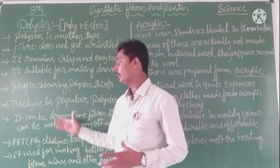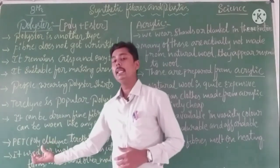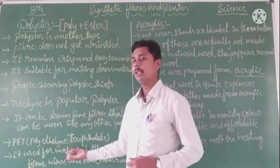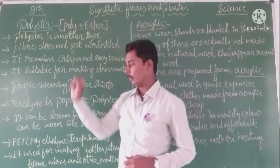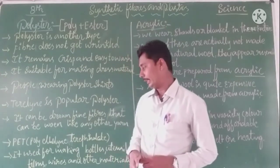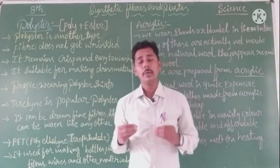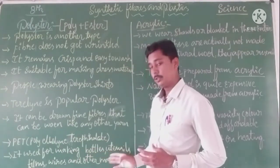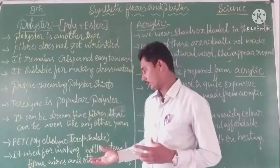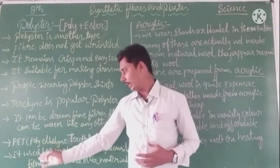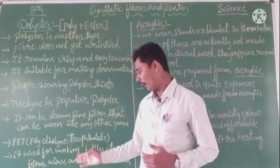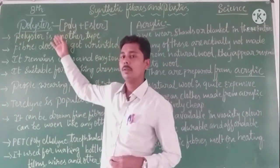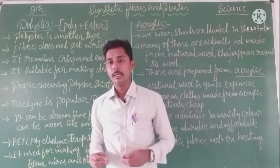Another form of polyester is PET — Polyethylene Terephthalate. This is also a chemical substance and a form of polyester. PET is used for making bottles, household utensils, films, wires, and other materials. PET is made from chemical substances and is a very versatile form of polyester.